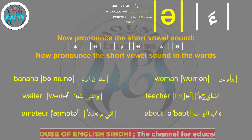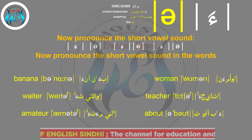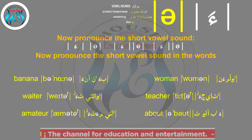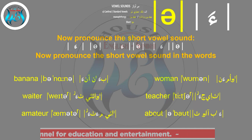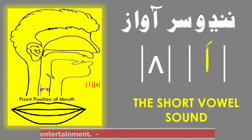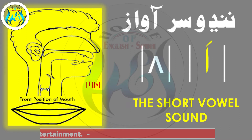Now pronounce the short vowel sound ə. Now pronounce the short vowel sound in the words: Banana, Woman, Waiter, Teacher, Tiny, About.